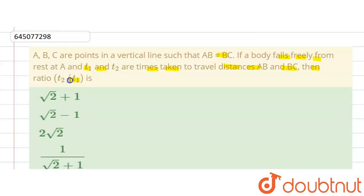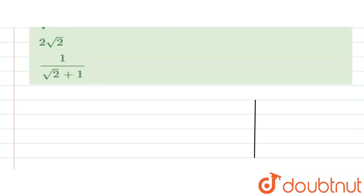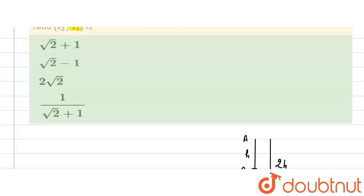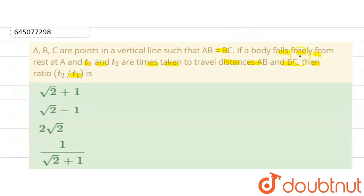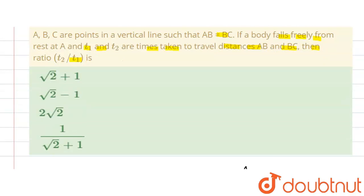Here we have to find ratio t2 upon t1. So firstly, here we can see that this is point A and this is B, this is C. So here this height is h and h, and this total height is 2h. And when body falls freely from rest here...